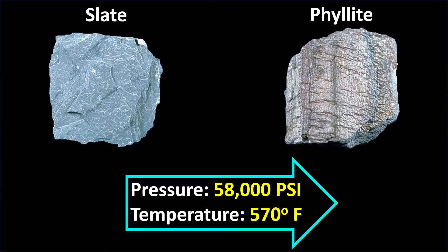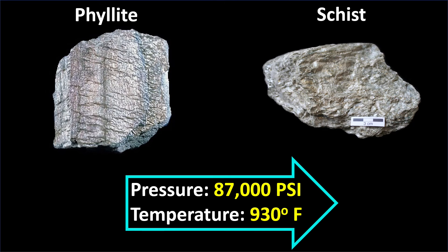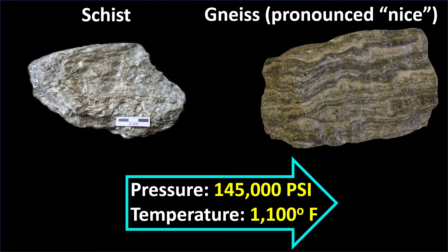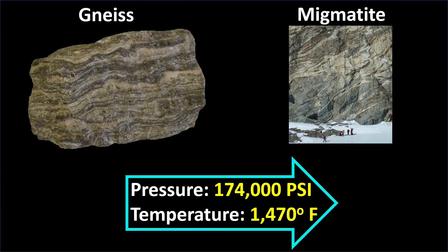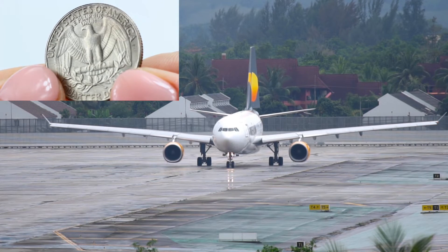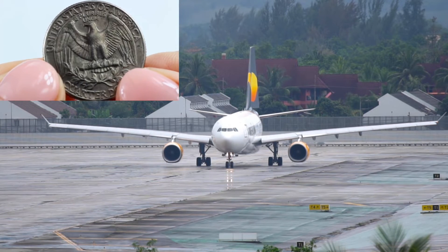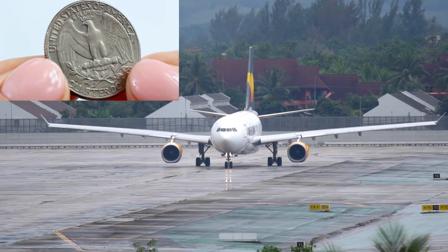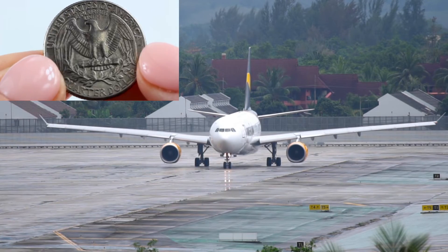Once shale has been turned into slate, that slate will turn into a different rock called phyllite if put under higher pressure and temperature. If that phyllite is then put under even higher pressure and temperature, it changes to schist. If that schist is put under even higher conditions, it changes to gneiss. If that gneiss is put under even higher pressure and temperature, it changes to migmatite. A pressure of 174,000 pounds per square inch would be equal to the entire weight of a plane concentrated on an area the size of a quarter.